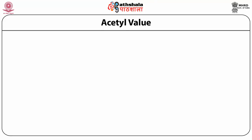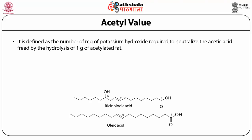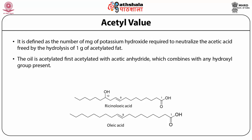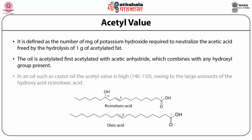Acetyl value is defined as the number of mg of potassium hydroxide required to neutralize the acetic acid freed by hydrolysis of 1 gram of acetylated fat. The oil is first acetylated with acetic anhydride, which combines with hydroxyl groups in the fatty acids. Since most fatty acids do not contain a hydroxyl group, excepting ricinoleic acid, in castor oil the acetyl value is high — about 146 to 150 — owing to large amounts of hydroxy fatty acid ricinoleic acid. Ricinoleic acid is a modification of oleic acid with an additional OH group.